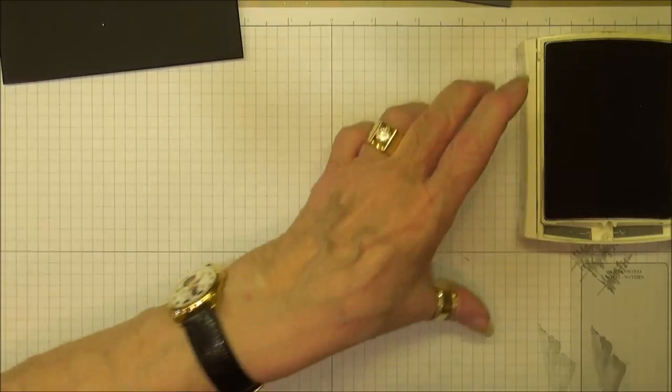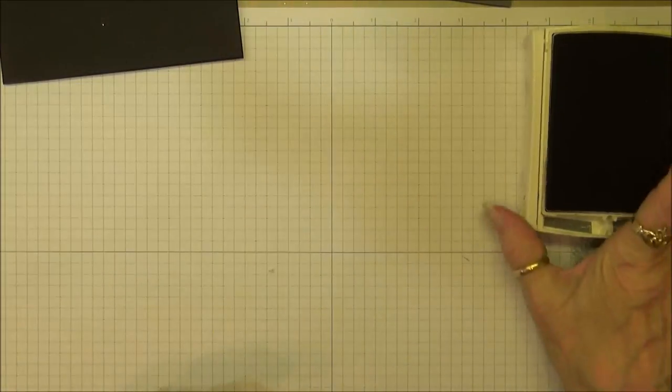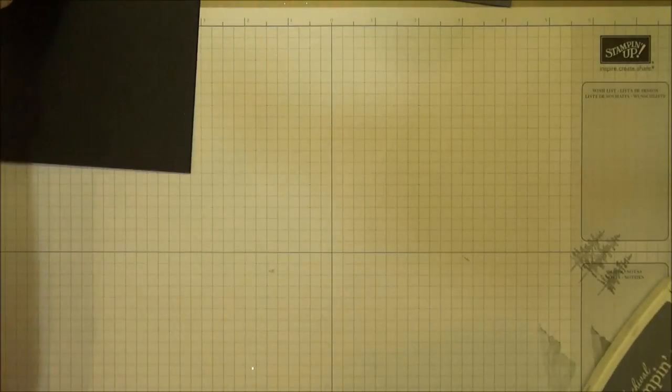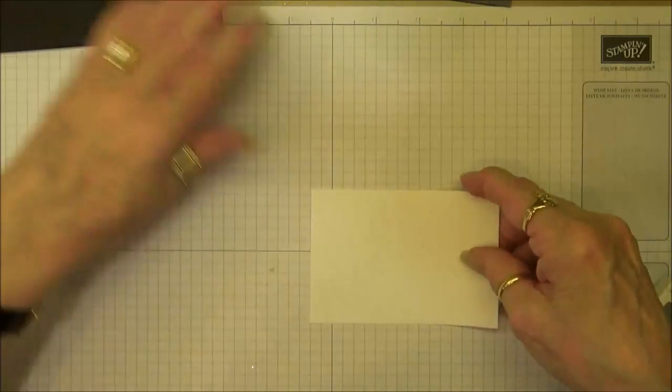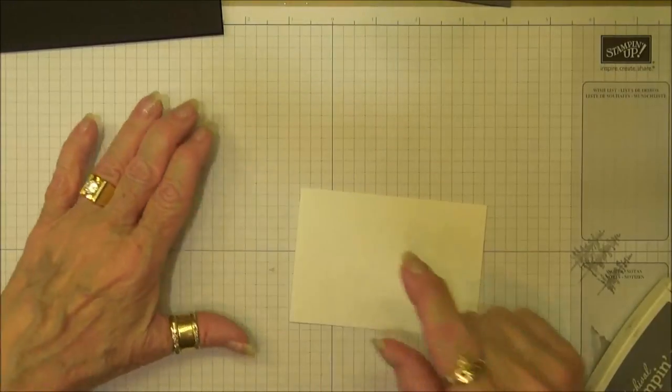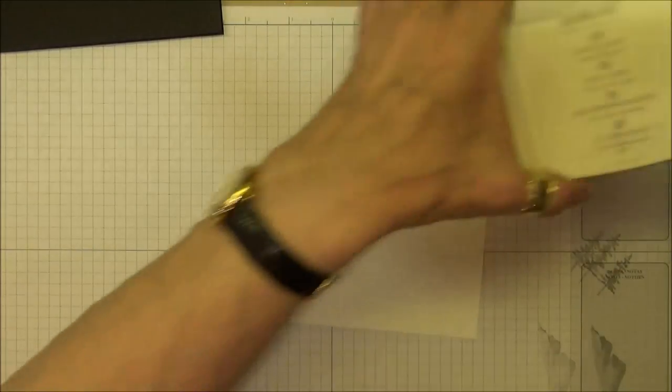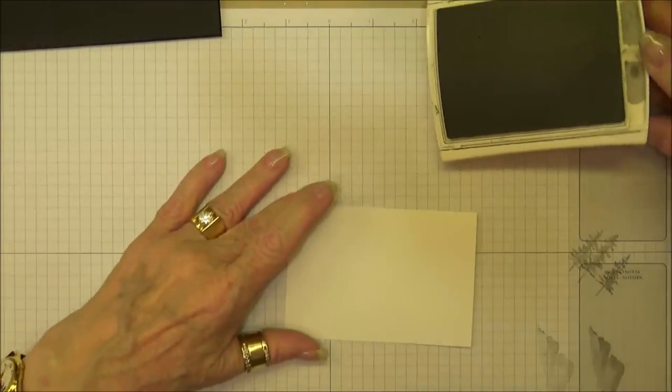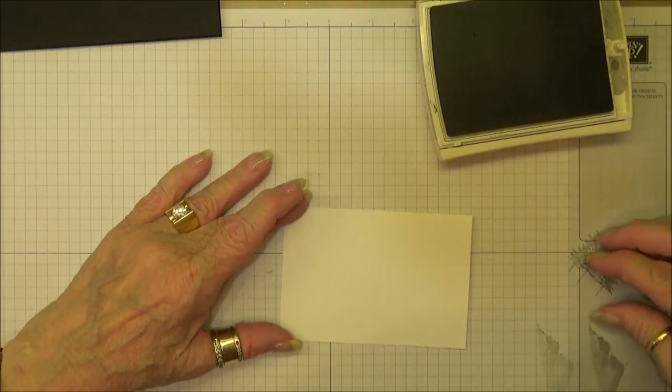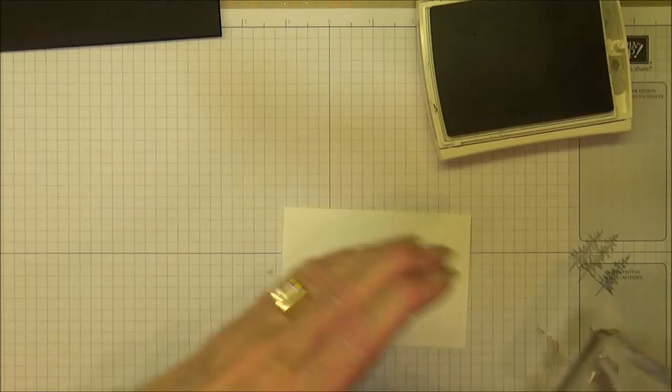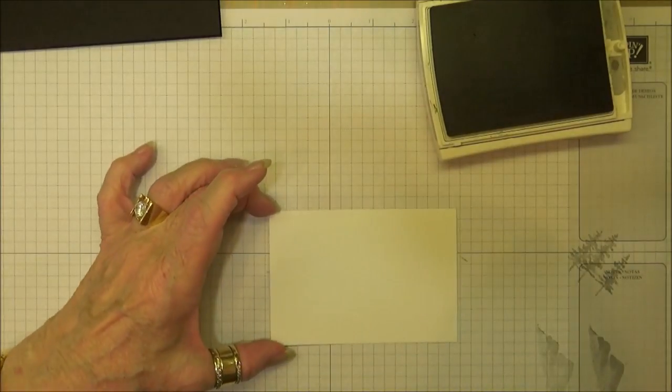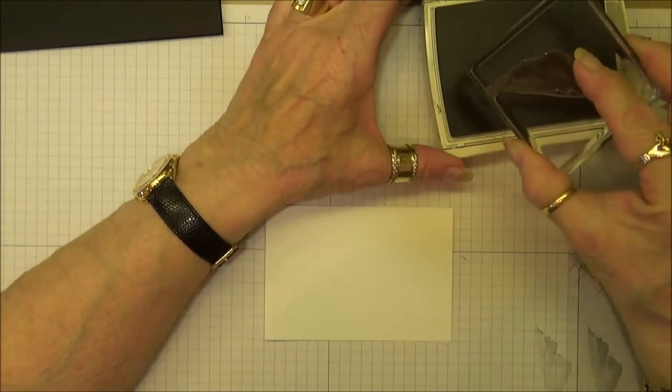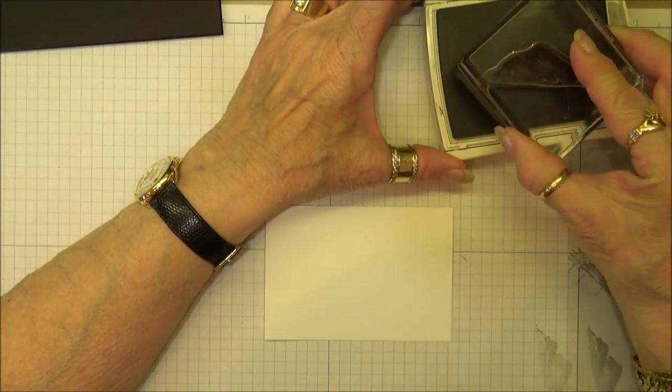Our next step is using the smoky slate ink to stamp our layout on the front of the card. What I did is I tapped everything off, which means you ink it and stamp it off, then stamp it on your paper. I just really liked a lighter overall image of the mountains.